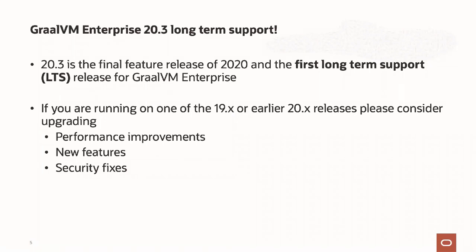If you are running on an earlier release — a 19 feature release or a 20 feature release like 20.1 — we do recommend you upgrade. There are improvements in performance, some new features, and maybe most importantly, security fixes. Every quarter, a new release comes out from GraalVM with all the latest CPU patches to ensure that known vulnerabilities are patched. So please get the latest release.